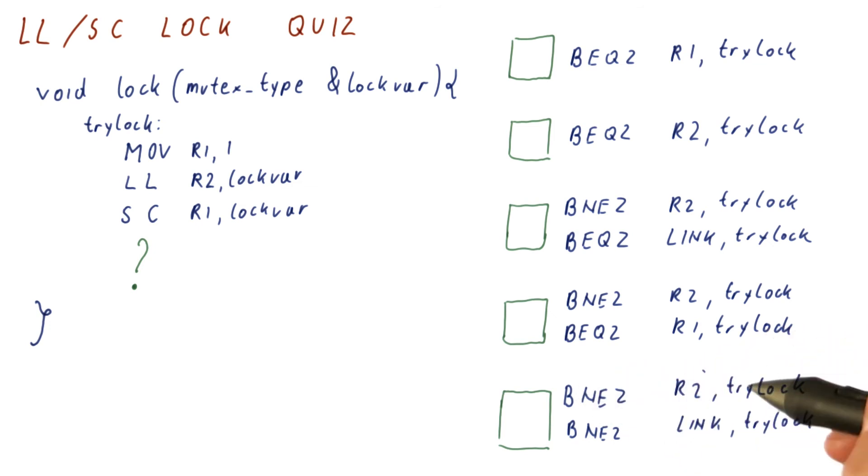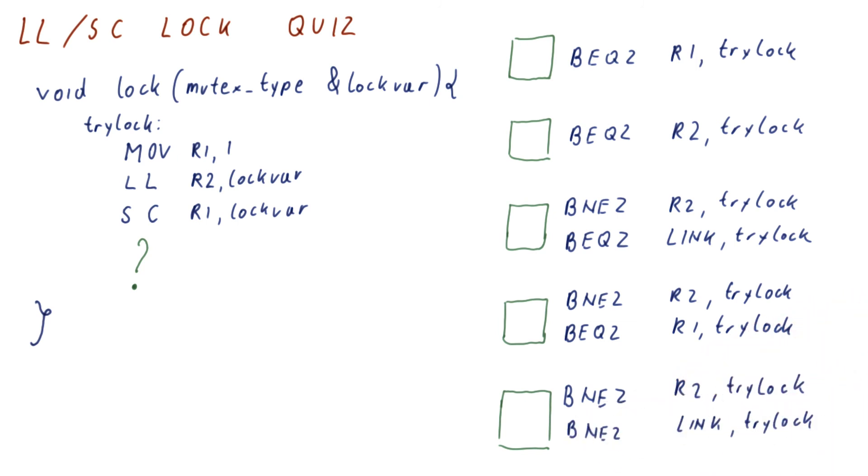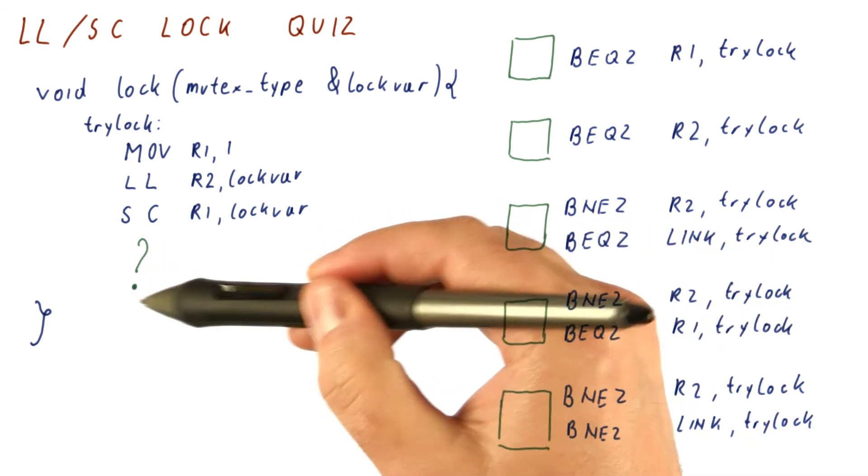And the fifth final option is to do branch on not equals 0 R2 to trylock followed by a branch on not equals 0 link trylock. So select which one of these five is the correct thing to put here.